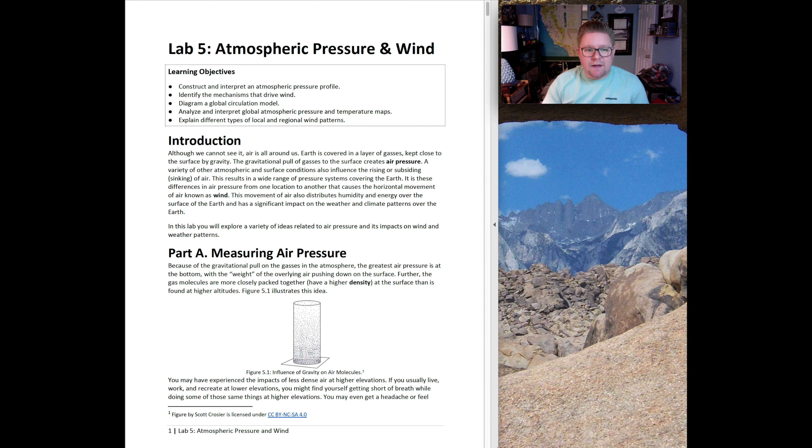Let's start with Part A, measuring air pressure. Because of the gravitational pull and the gases in the atmosphere, the greatest air pressure is at the bottom, with the weight of the overlying air pushing down on its surface. Depending on your altitude or elevation, depending on where you are and how much atmosphere is above you, that's measuring the pressure. If you're in a place of very low elevation, you have a lot more atmosphere between you and above pushing down, so you will be experiencing really high pressure.